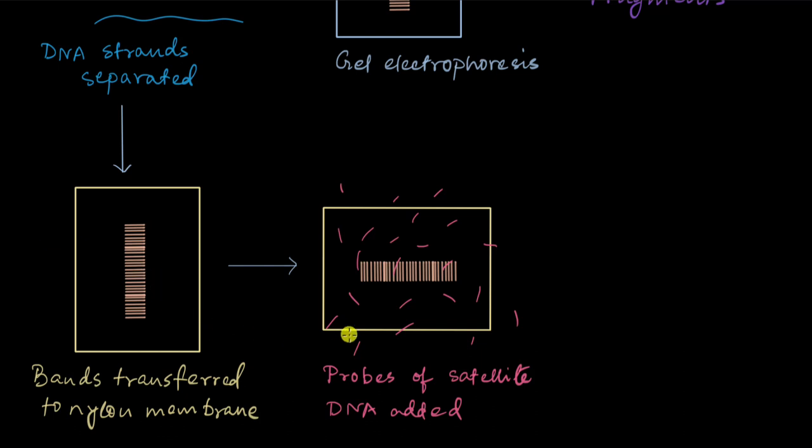So, since right now the DNA bands that we have on this nylon membrane are all single-stranded because we took care of that before, all of these DNA bands, they are single-stranded. And out of these, whichever belong to satellite DNAs that we are interested in, those will bind to these probes. Because these probes have complementary sequences to the sequences of the bands that we are interested in. So the probes go and bind there.